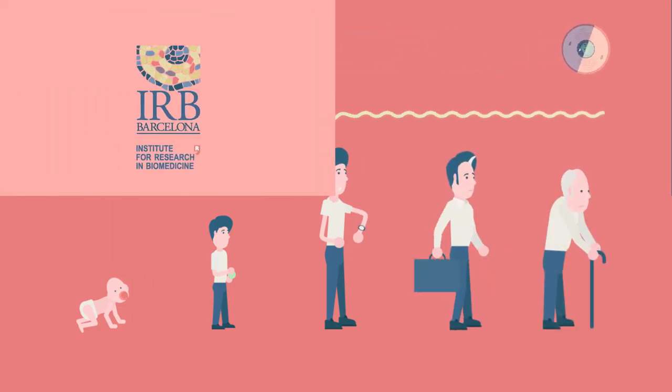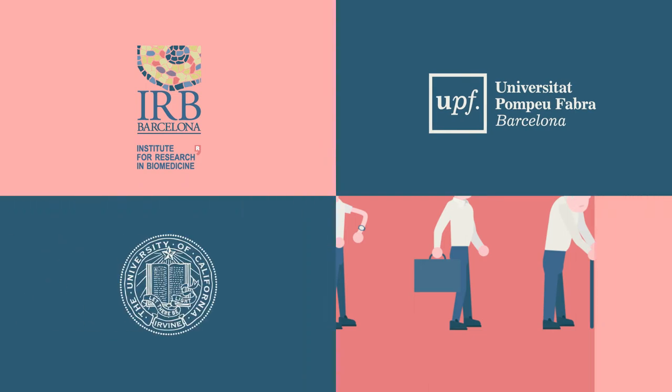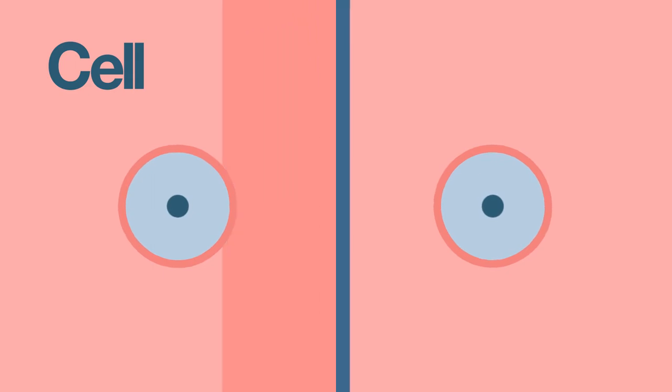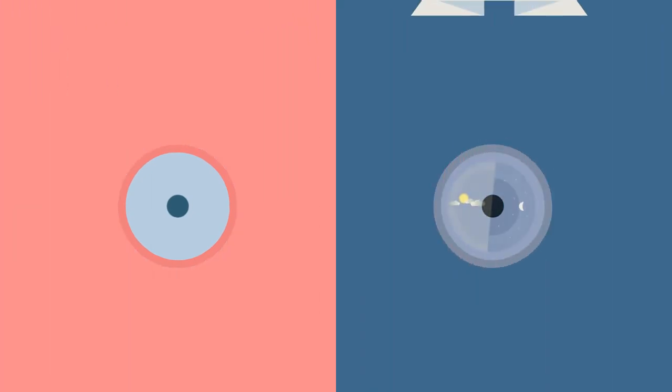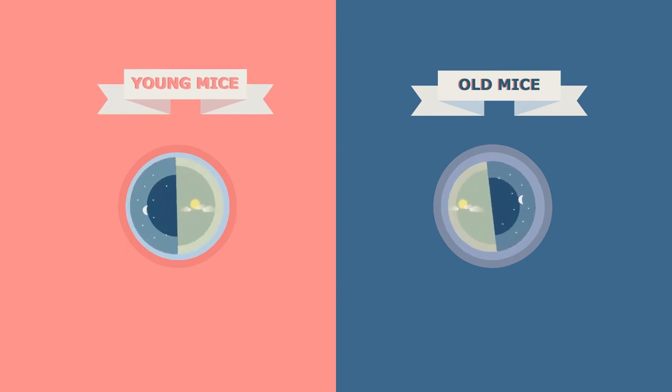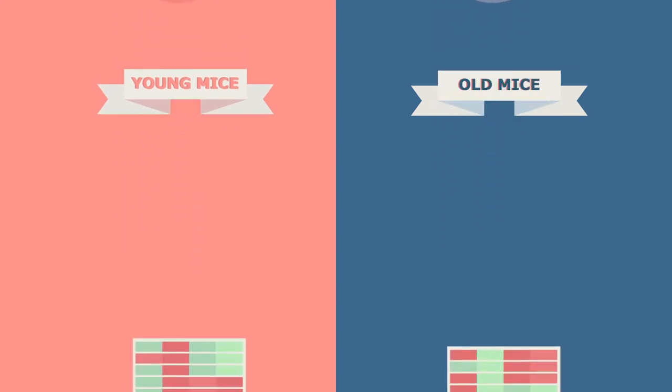Recent research performed in Barcelona and California and published in the journal Cell shows that in stem cells, those that divide to regenerate tissues, the circadian rhythms of old cells are just as active as in young ones. But the difference is that they don't activate the same genes.